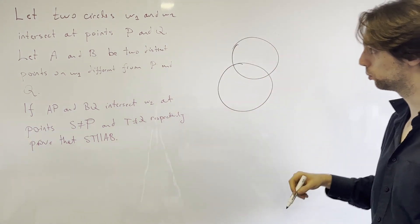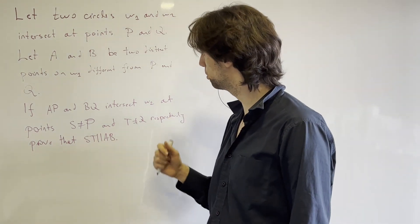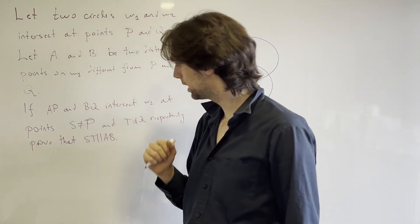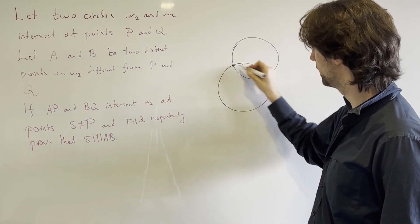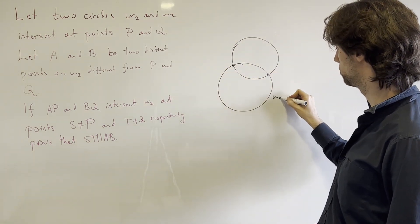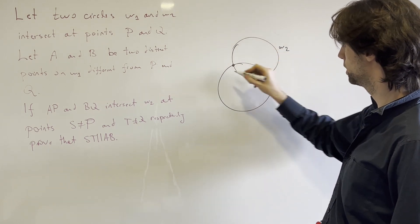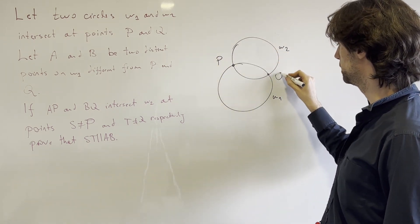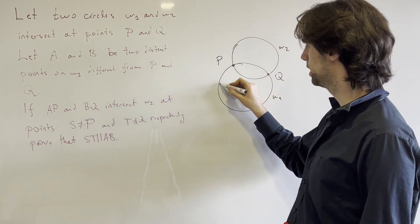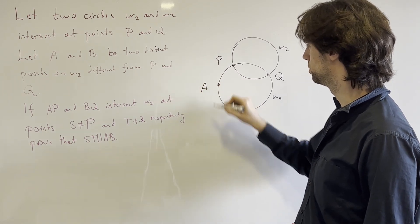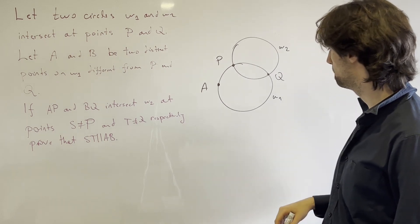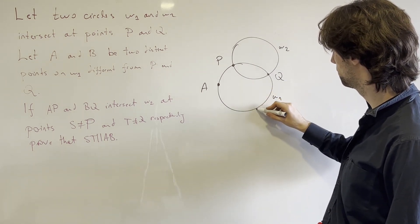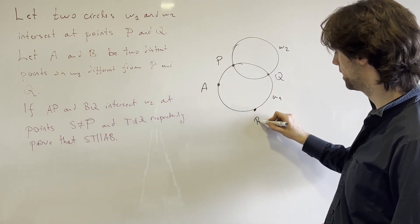So we have these two circles w1 and w2 that intersect at points P and Q. A and B are two distinct points on w1. So we have, let's call this circle w1, w2, B and Q. A and B are some two distinct points, let's have them be here - A and B.